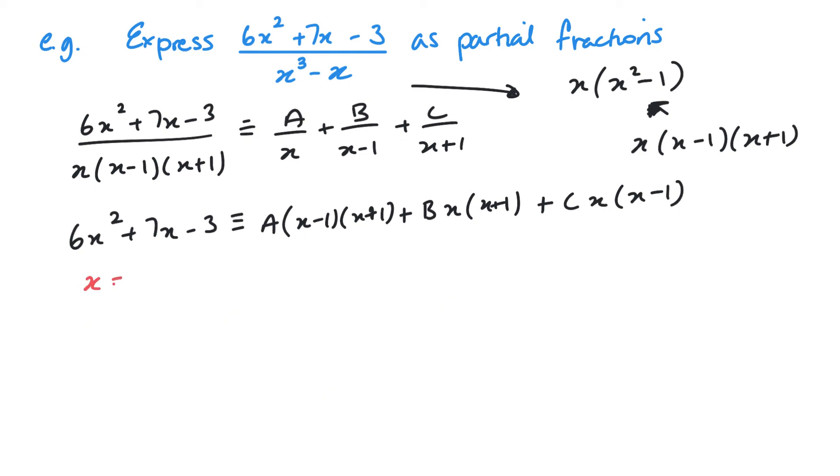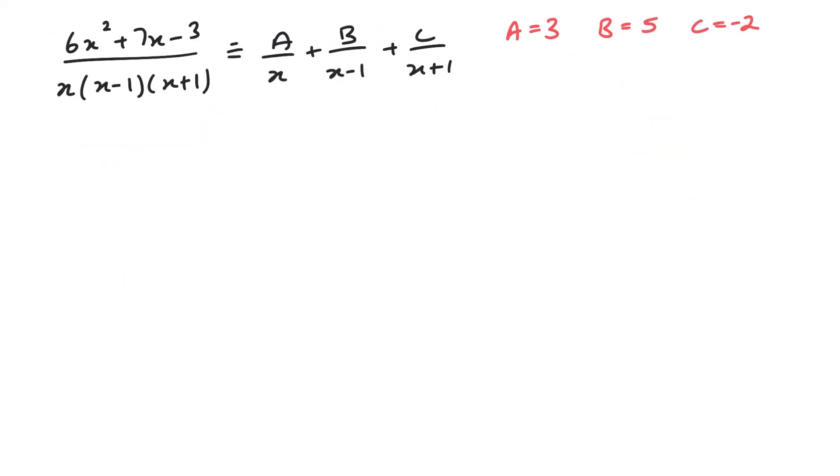And finally, I'm going to substitute x equals 0. This will get rid of the B and the C and give me the A. So 6 times 0 squared plus 7 times 0 minus 3—I could have just gone straight in with minus 3. Then I've got A, and in my brackets I've got minus 1 and plus 1 as x is 0, and B and C will disappear. So we've got just minus A on the right. That means A must equal 3. And now that we've found all 3, we can finish the question off. You should always finish by fully writing it out again and substituting in your values for A, B, and C. So 3 over x plus 5 over x minus 1 minus 2 over x plus 1.